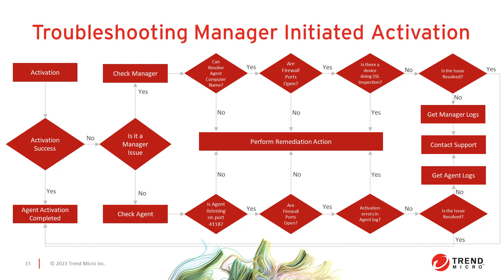When troubleshooting manager-initiated activation, some of the same troubleshooting concepts apply. When activating a computer from the manager, that server must be able to resolve the fully qualified domain name of the agent computer being activated. We also need to make sure firewall ports are open for the manager to contact the agent on port 4118, and the agent should be listening on port 4118, which can be confirmed using a command like netstat. Any network device between the manager and the agent that performs SSL inspection needs to be addressed. If there are no activation errors in the agent log, it would be beneficial for our support team to review a diagnostic package from the Deep Security Manager, which can be created under Administration > System Information.